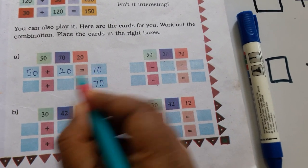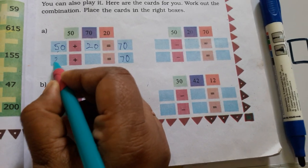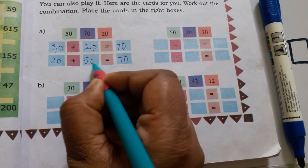50 plus 20 is 70. Now, we just interchange the numbers here. Just change the numbers and you get the answer.